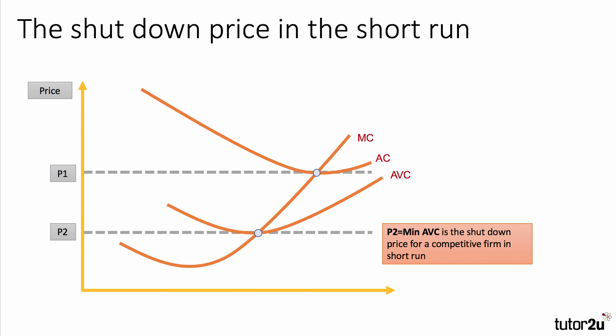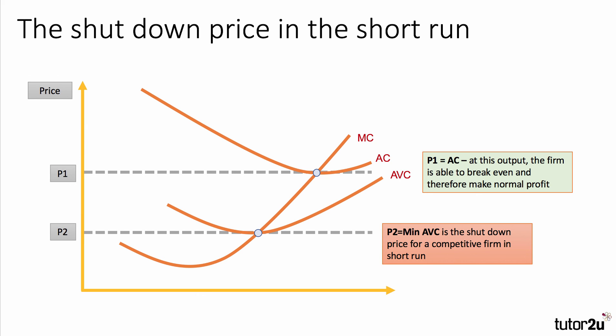At price P2, the firm can at least cover the running costs of the output it supplies. But P2 is well below P1 — quite a long distance from covering all costs and breaking even. Any price below P2, below the minimum of average variable cost, would be a price below the shutdown point, and we'd expect some businesses to shut down production because they can't even cover variable costs. However, if the price comes up to P1, the firm can cover cost per unit and is able to break even, making normal profit.